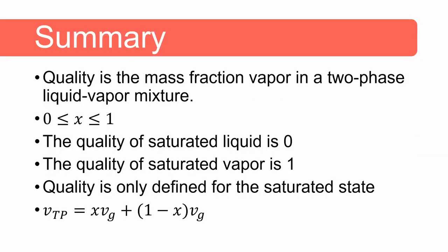So in summary, the quality is the mass fraction vapor in a two-phase liquid vapor mixture. Quality is always between zero and one. At zero, it shows it's a saturated liquid. And at one, it shows it is a saturated vapor. Quality is only defined for the saturated state. We can also use this equation to calculate the specific volume of a two-phase liquid vapor mixture using quality.